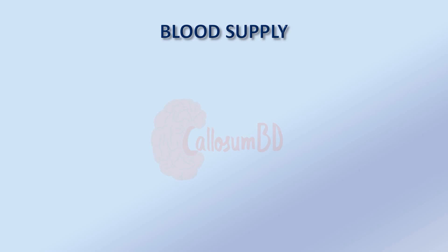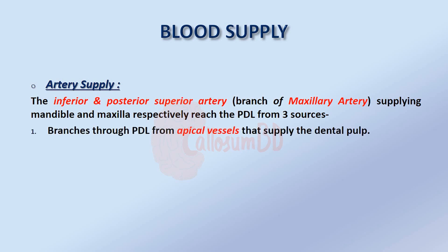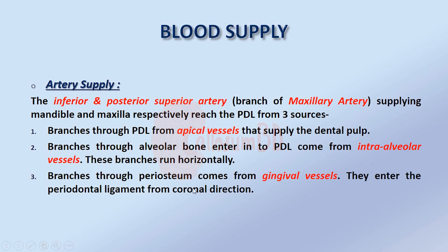The periodontal ligament has an abundant vascular supply. The inferior and posterior superior arteries, which are branches of the maxillary artery supplying the mandible and maxilla respectively, reach the periodontal ligament from three sources: branches from the apical vessels that supply the dental pulp; branches through the alveolar bone from intra-alveolar vessels, which run horizontally; and branches through the periosteum of alveolar bone from gingival vessels, which enter from the coronal direction.